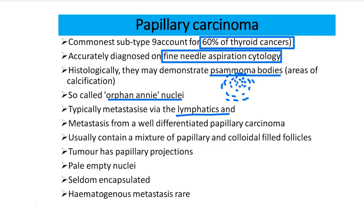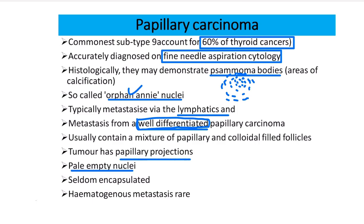Papillary carcinoma metastasizes via the lymphatics. Metastasis usually occurs from well-differentiated papillary carcinoma. The tumor typically contains a mixture of papillary and colloid-filled follicles, with papillary projections and pale empty nuclei — orphan Annie nuclei. It is non-capsulated.